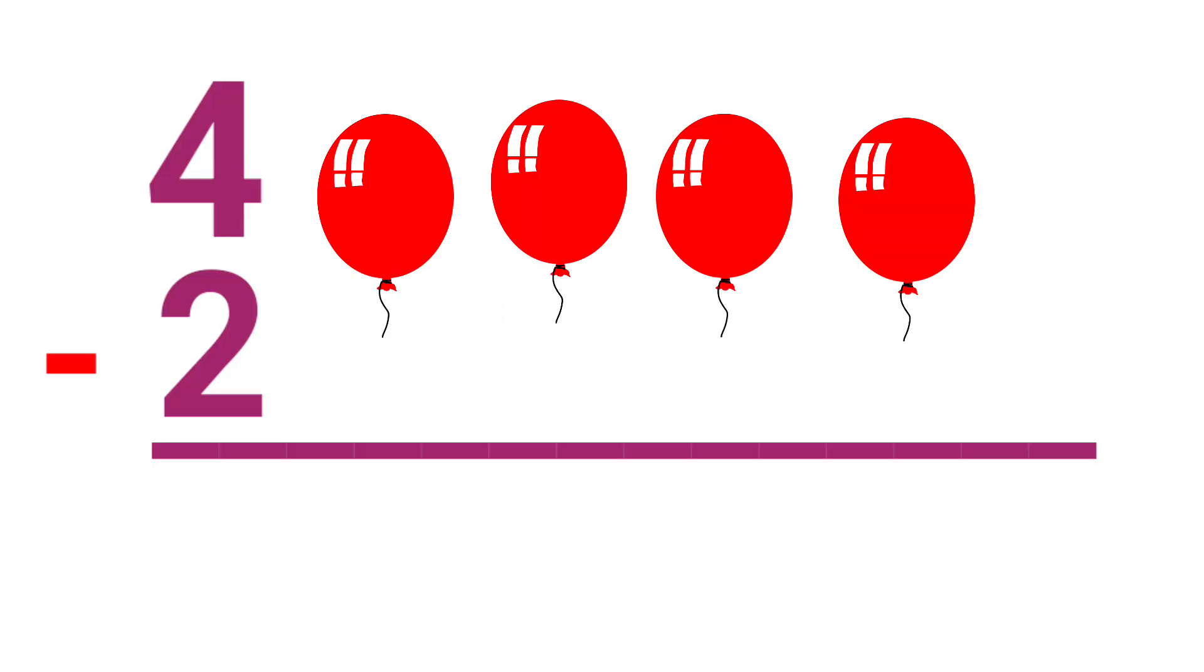Children, in subtraction we are going to use two symbols. One is subtraction, another one is equal to. First we are going to see what is subtraction. Subtraction is nothing but the difference. Let's start with some examples. Then you will get a clear idea.